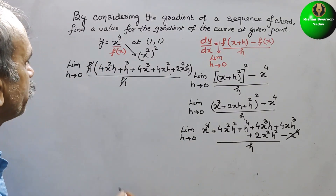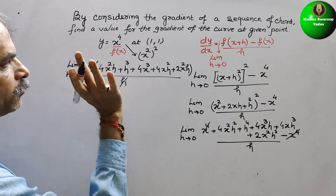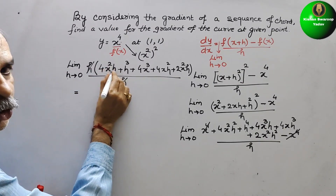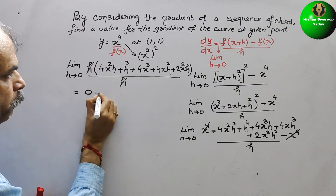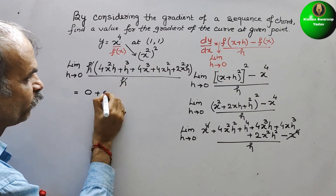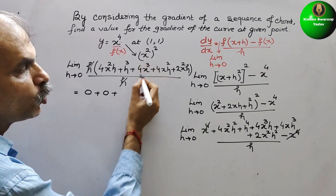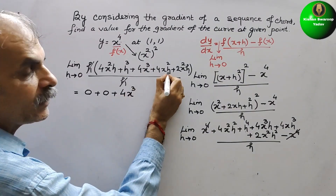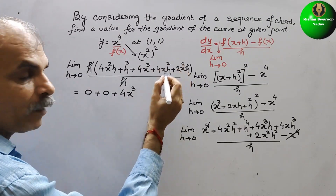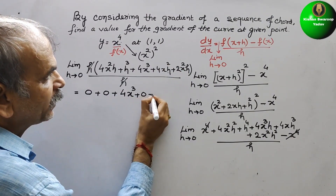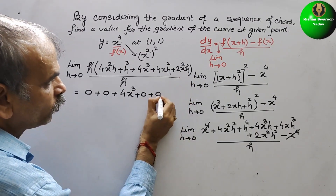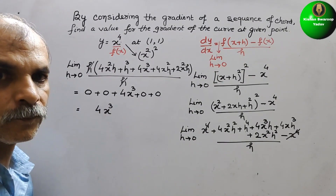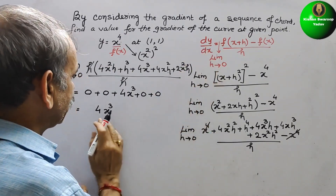Now we substitute H equal to 0. So 4x² times 0 is 0, H cubed gives 0 cubed which is 0. There is no H in 4x³, so we simply write 4x³. All other terms have H, so 0 times any number gives 0. Therefore, dy/dx equals 4x³.